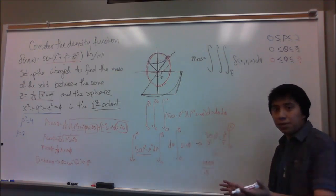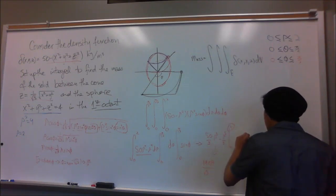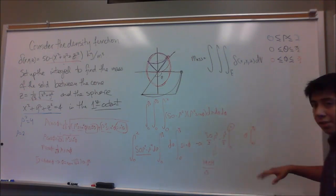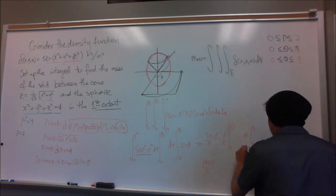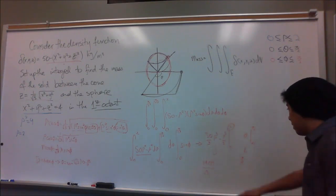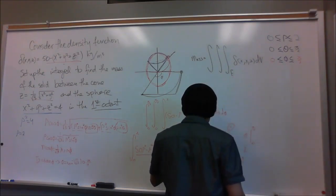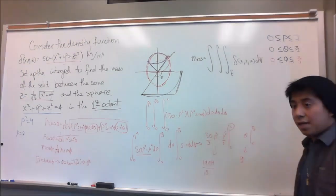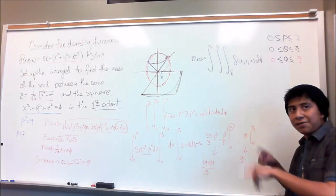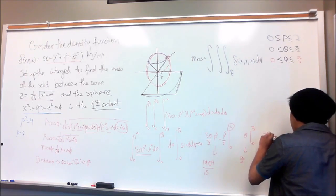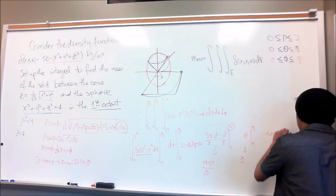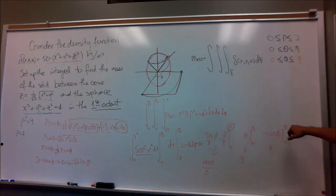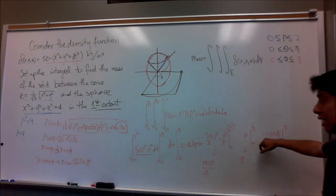For the theta integral, the antiderivative of 1 is just theta, evaluated from 0 to pi over 2. The zero term vanishes, so the result is pi over 2. For the phi integral, the antiderivative of sine phi is negative cosine phi, evaluated from 0 to pi over 3. Plugging in: negative cosine of pi over 3 is negative one half, and we subtract negative cosine of 0 which is negative 1.